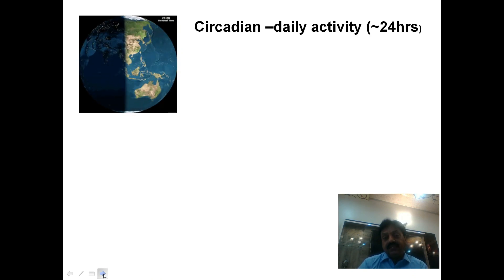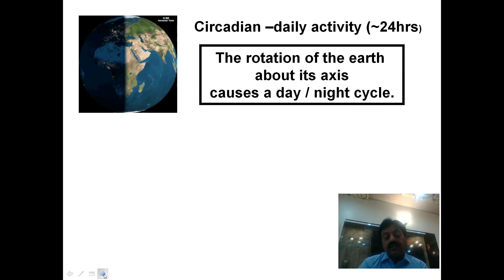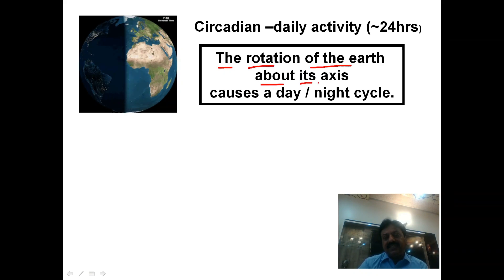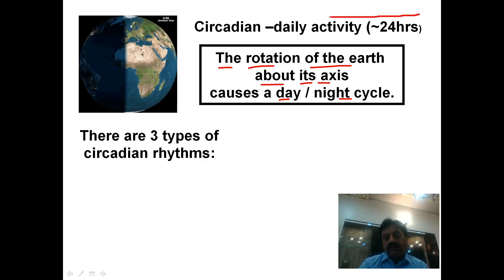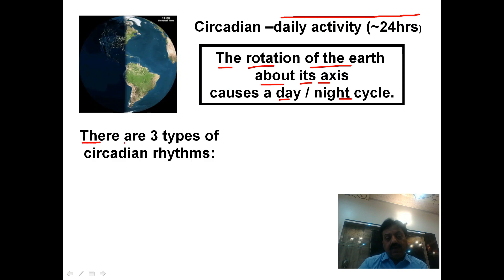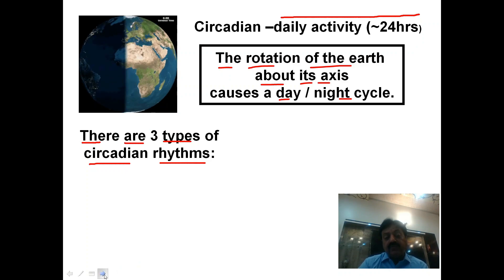The rotation of the Earth about its axis causes the day and night cycle. There are three types that operate in the 24-hour daily cycle. In 24 hours, with light or dark periods, they are repeated at different intervals.